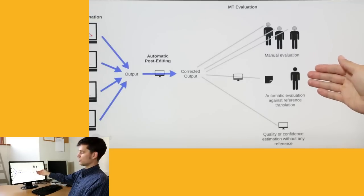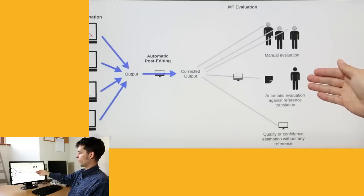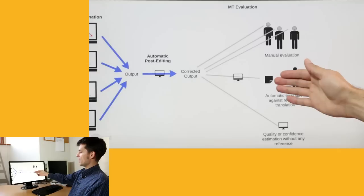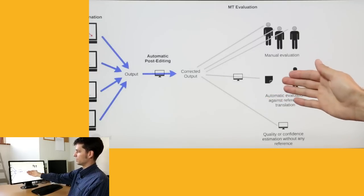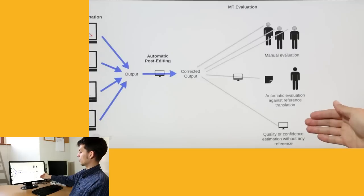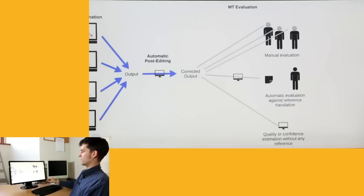What we often use is some automatic evaluation that usually requires some human reference, some expected translation, expected output of the MT system, and we can then automatically match the output with the expected output. Or we can also work on quality estimation or confidence estimation, where we assess the output quality without access to any reference translation.